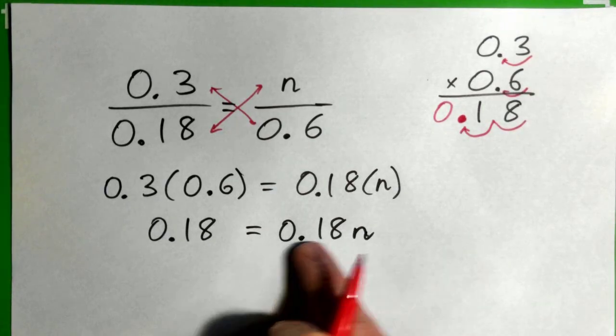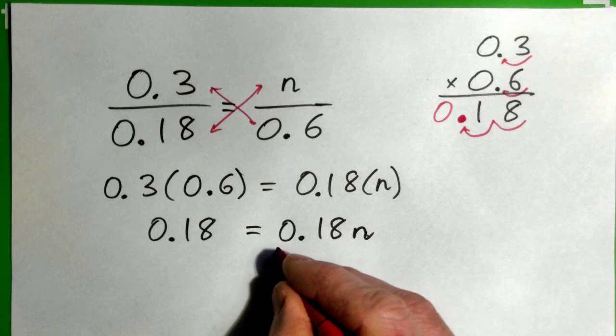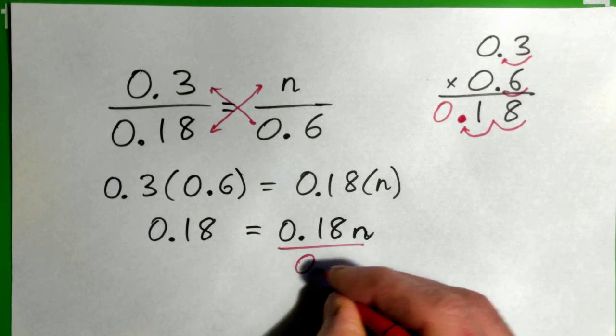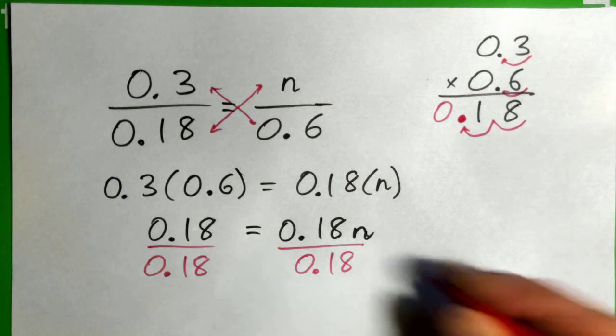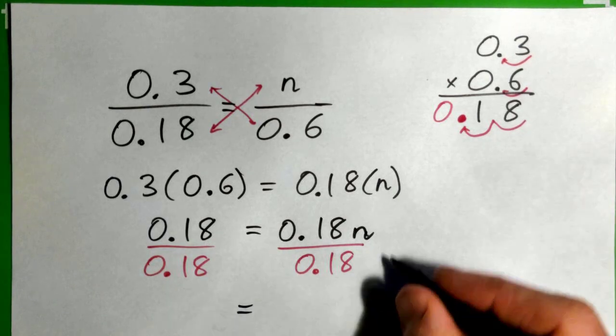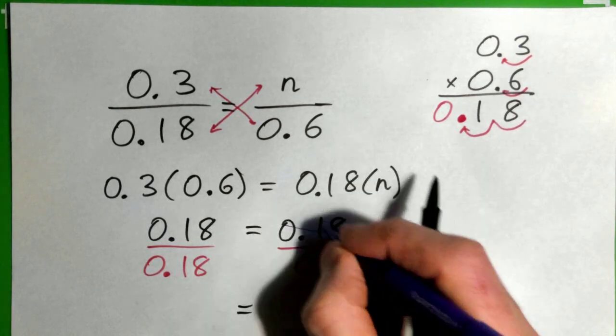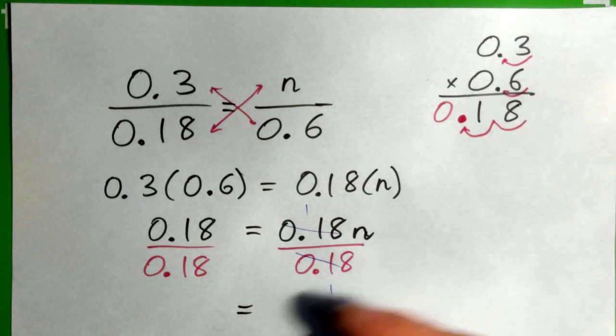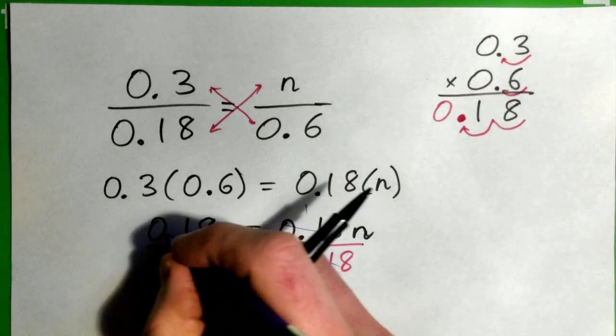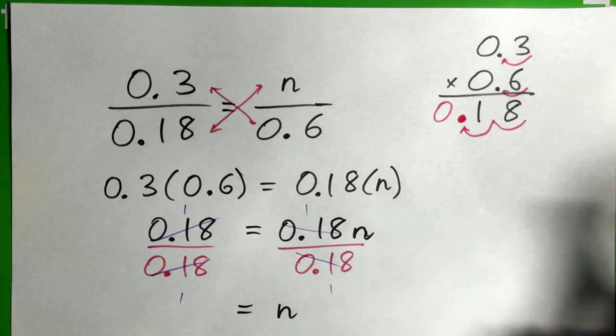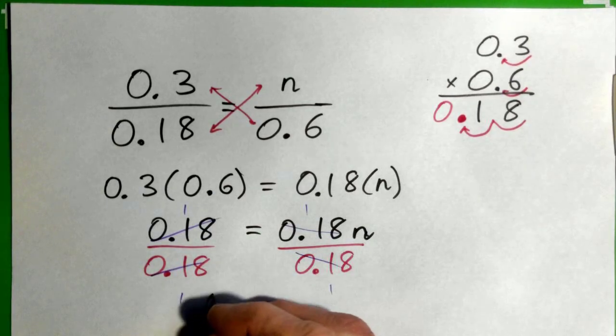So n has been multiplied by 0.18, so to get n on its own, we need to divide by 0.18 on both sides. So 0.18 here obviously cross-cancels, and you get n on the right. And this over this, the same thing over the same thing, that's 1 over 1, which is just 1. So n equals 1.